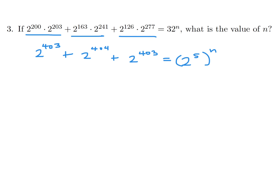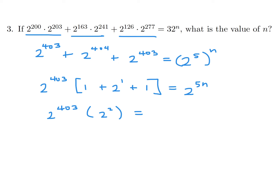Let's factor out 2 to the 403, giving us 1 plus 2 to the power of 1 plus 1, and the right side is 2 to the power of 5n. In the bracket that's 4, and 4 is 2 squared. So bases are the same and we add: 2 to the power of 405 equals 2 to the power of 5n. Therefore 405 equals 5n, and n equals 81.